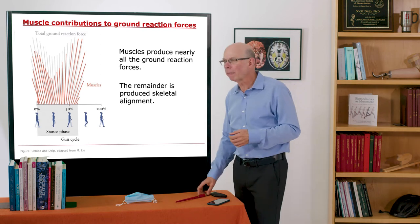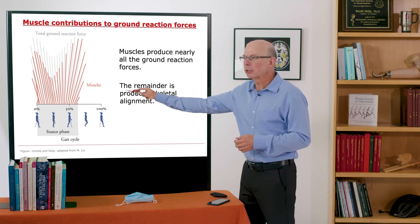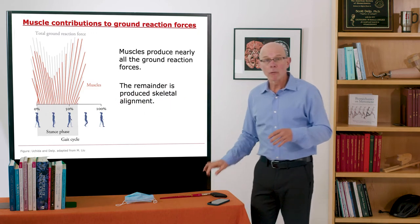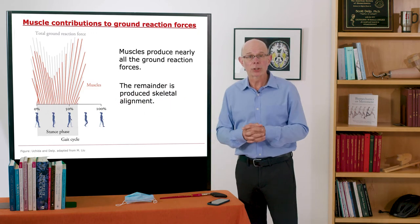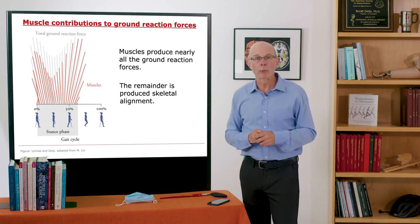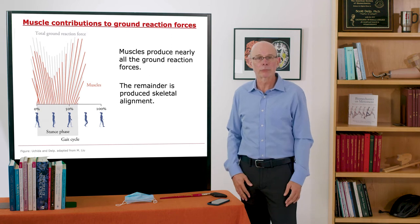We can quantify how each muscle, for example, contributes to the ground reaction force that I'm showing here. So what we see if we sum all of the muscle actions together is that muscles produce nearly all of the ground reaction force. If your muscles are not on, you can't produce a ground reaction force.